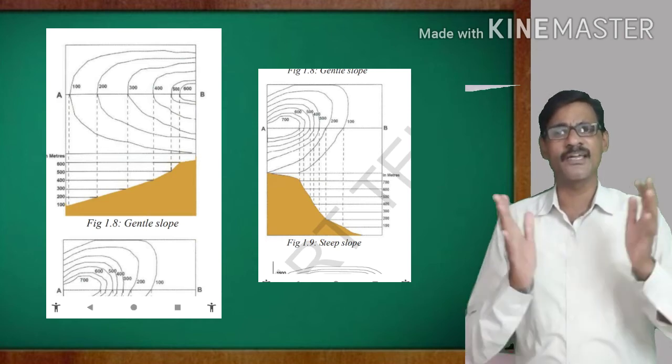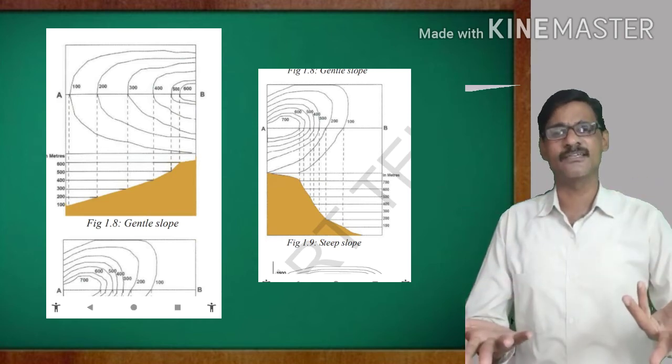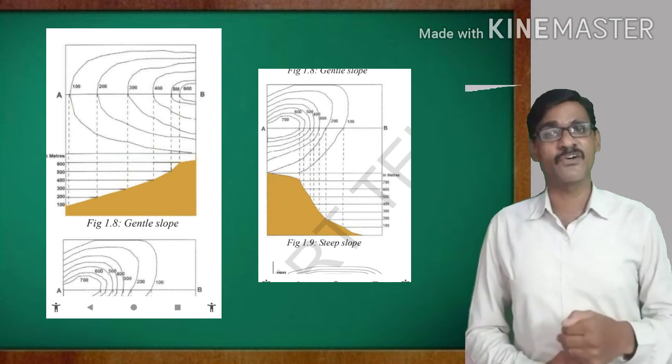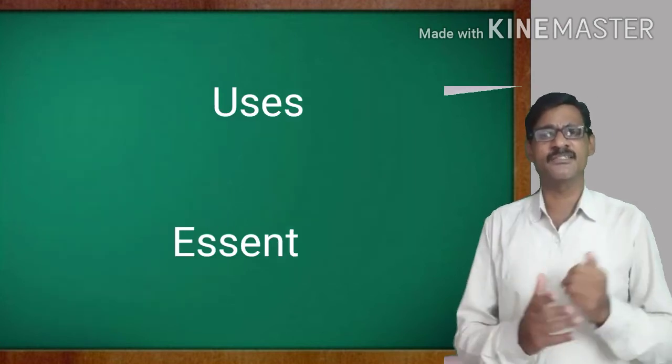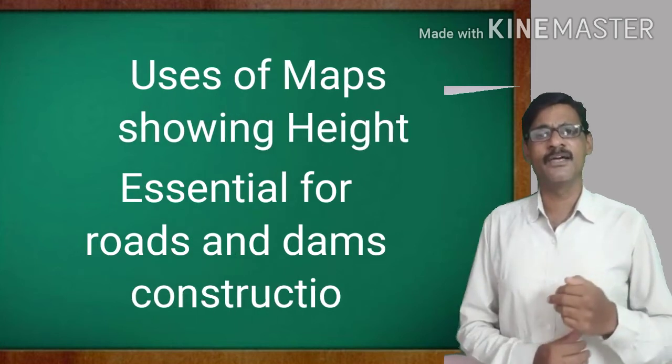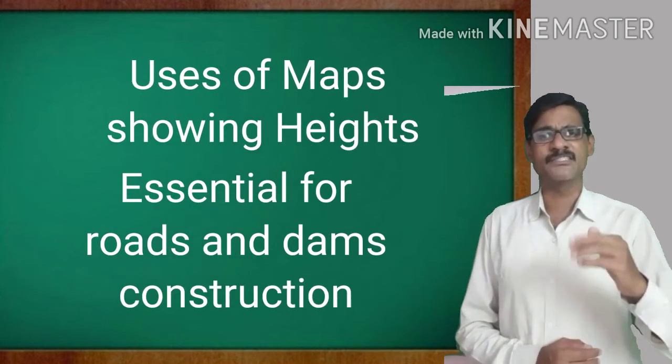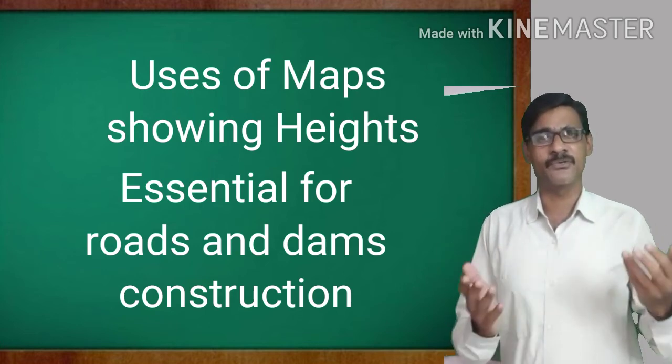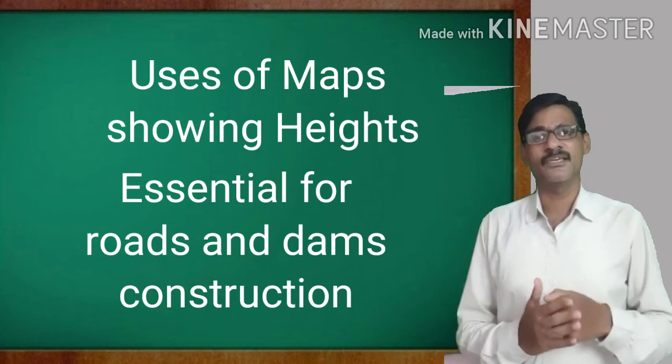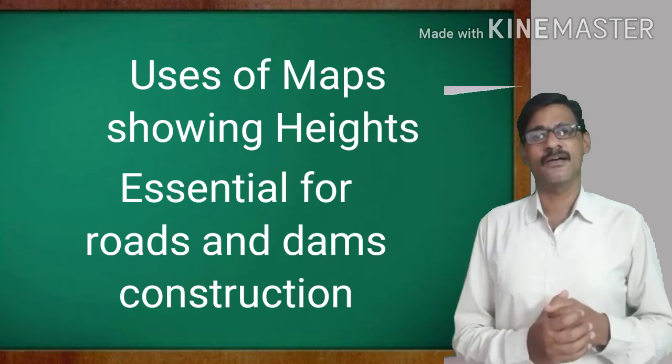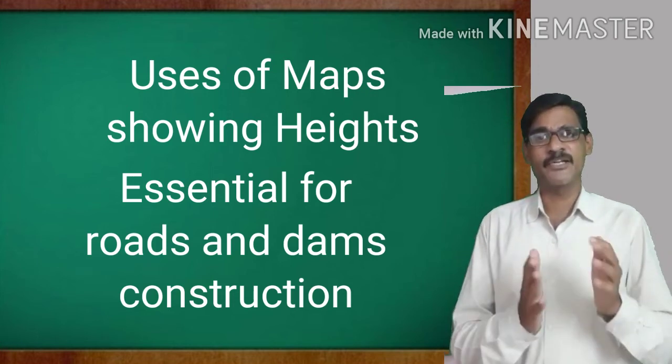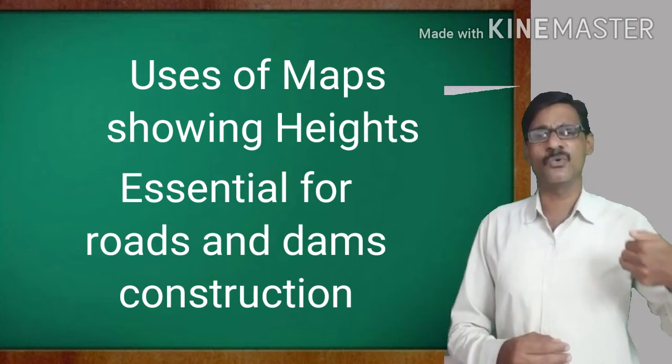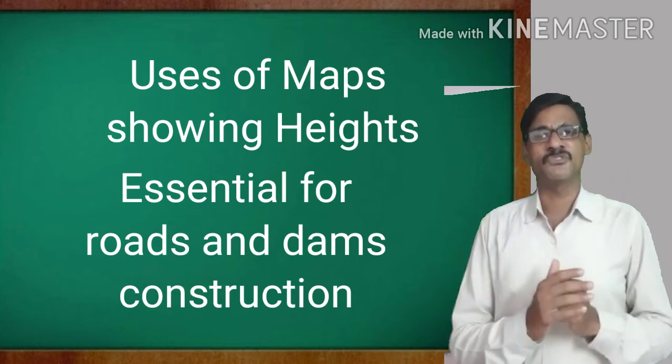So, like this, these contour lines, they are expressing, they are showing the heights of a landscape, easily. With the help of colors also, we can find easily the heights on the maps. With the help of heights shown on the map, we can estimate the landscape, whether there are any mountains or plateaus, and how is that landscape. The mountains, hills, valleys, are all shown with the help of these maps showing the heights.